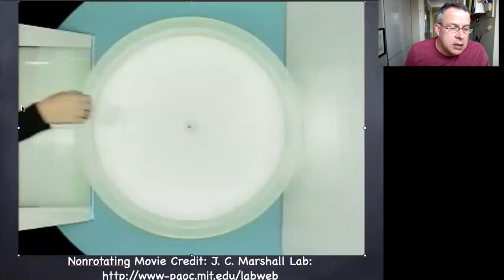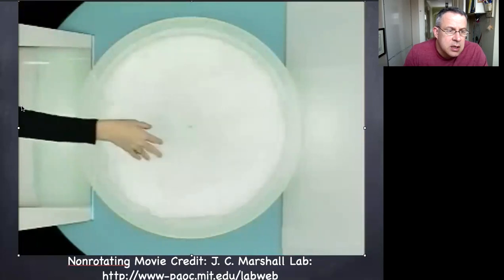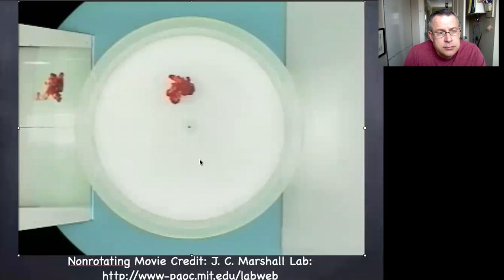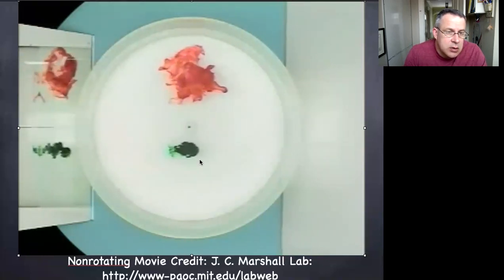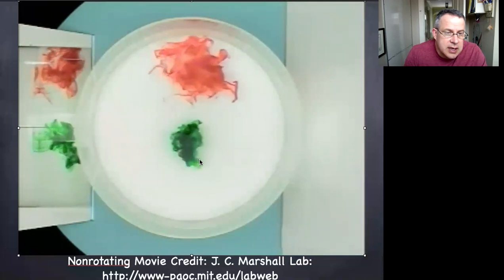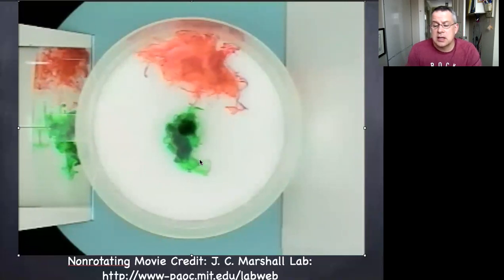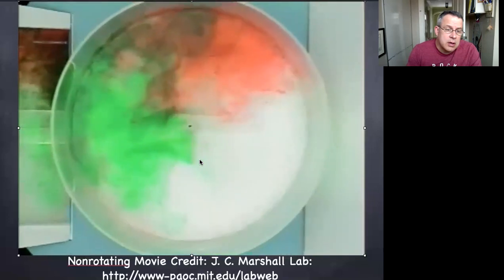This is a really nice example video from John Marshall's lab at MIT. This is a tank of water. You can see the mirror shows you the side view — they've stirred it up and now they're squirting in some dye. The dye is at the same temperature and roughly the same density as the water in the tank. The turbulence basically spreads out the dye, like cream in a cup of coffee. That's exactly what you'd expect to see — this is the familiar process of fluid flow in motion.